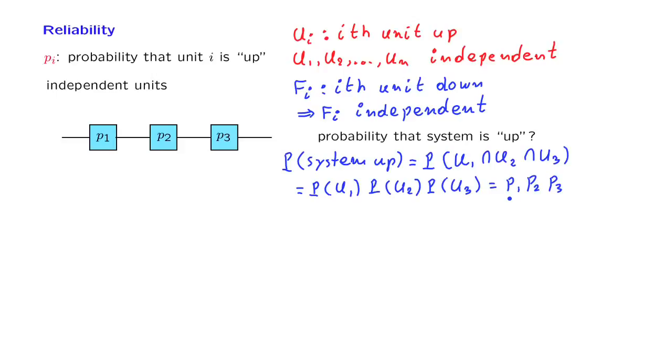Now let us consider a different system. In this system, we will say that the system is up, again, if there exists a path from the left to the right that consists of units that are up. In this particular case, the system will be up as long as at least one of those three components are up. We would like, again, to calculate the probability that the system is up.